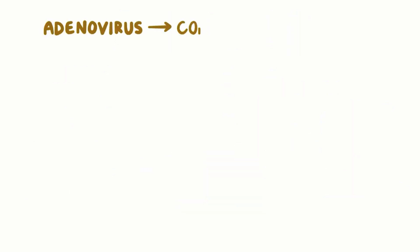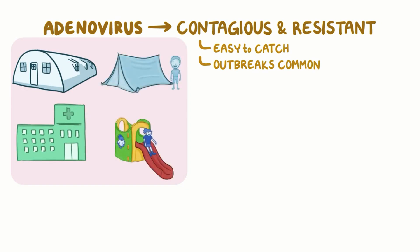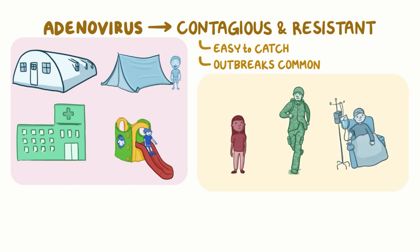Now adenovirus is very contagious and resistant, so it's easy to catch and outbreaks are common. As a result, it spreads quickly in close-quarter settings like military barracks, hospitals, summer camps and daycares. It's more common in children and military recruits, and it's also particularly dangerous for immunocompromised individuals.